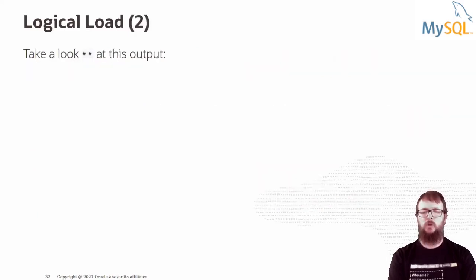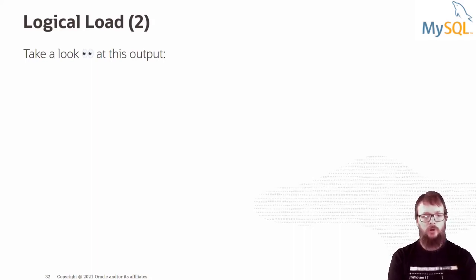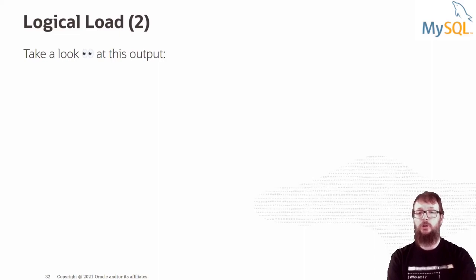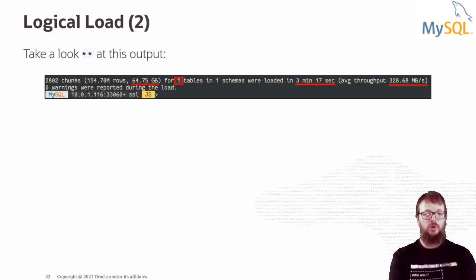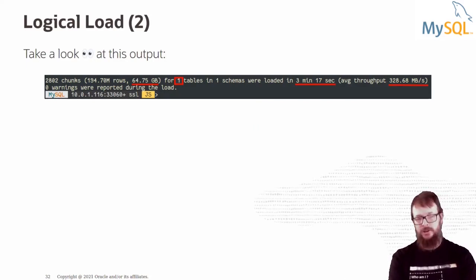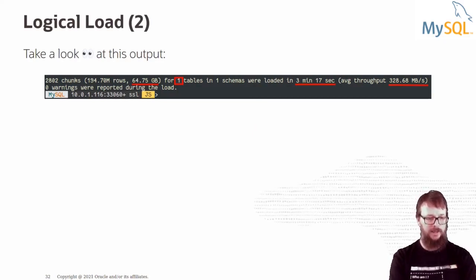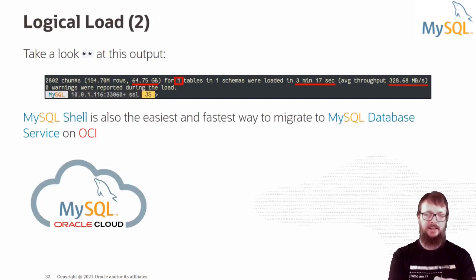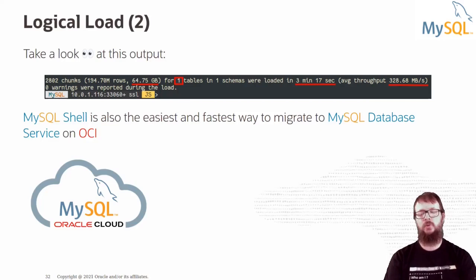Looking at an example output: we had one single table of 65 gigabytes in one schema, and it was loaded in just 3 minutes and 17 seconds using the dump and load utility. This is very fast. This tool also has everything included to help people migrate to MySQL Database Service on OCI — if you want to migrate to OCI, this is the easiest way to do it.